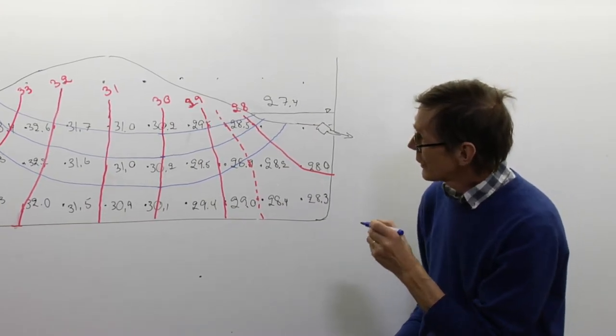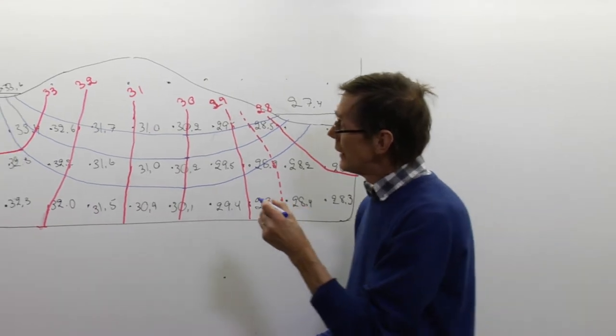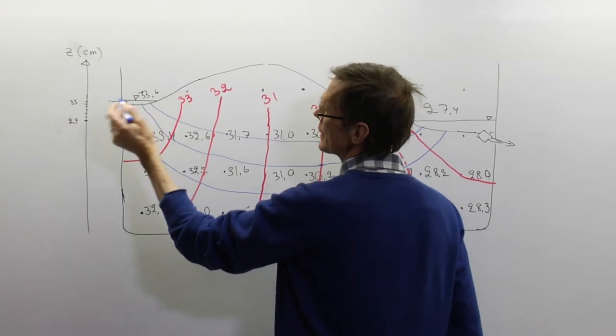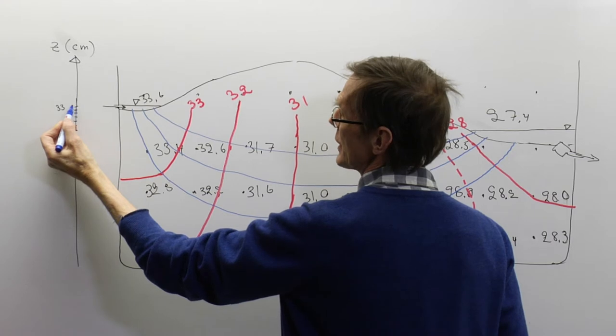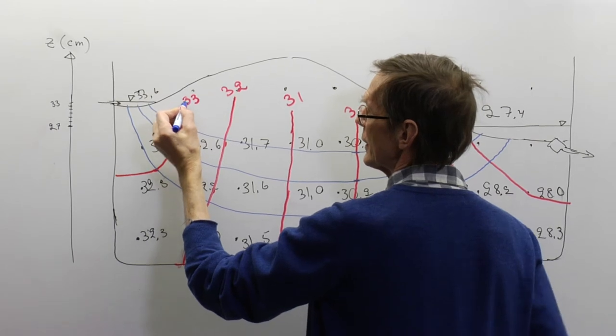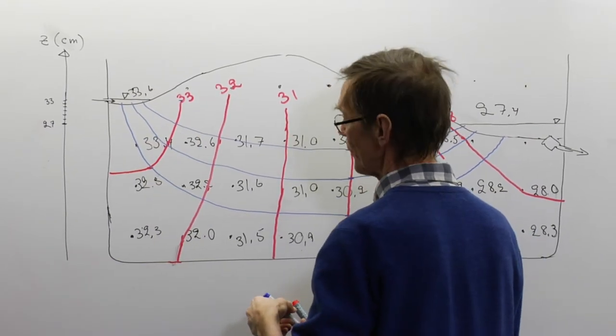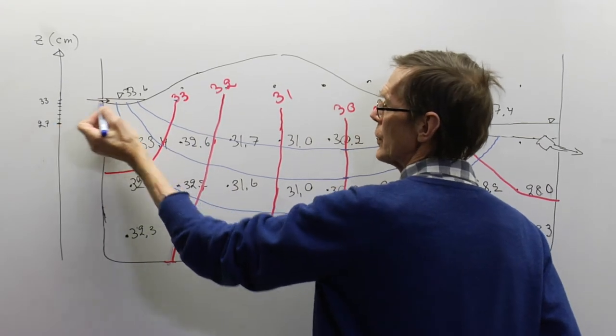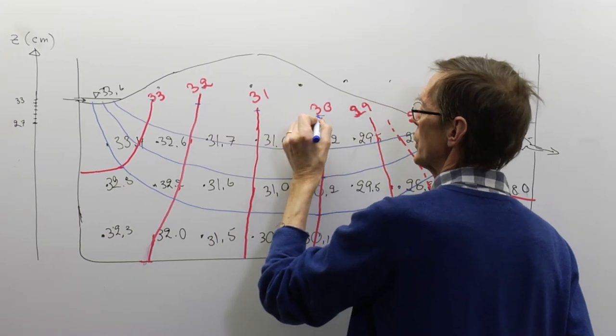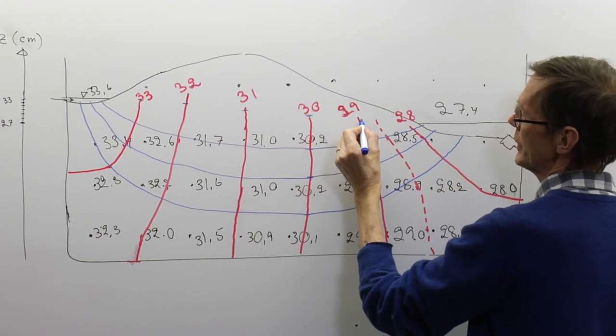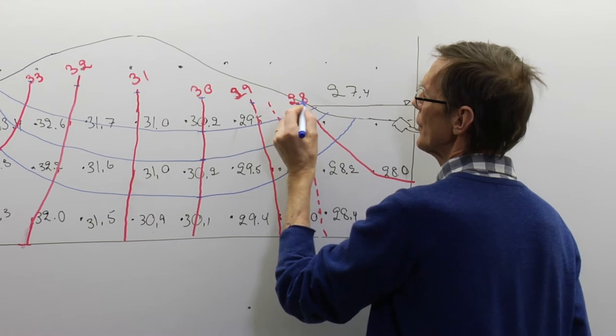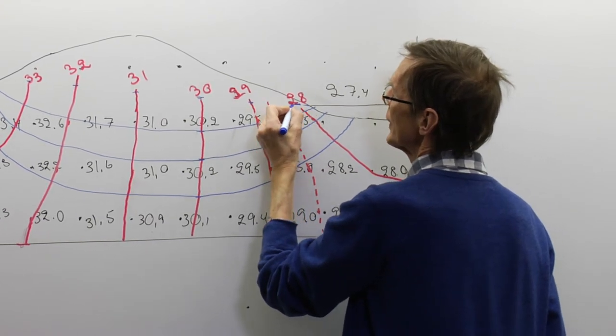We can also draw the groundwater table. It's a level where the total potential equals the height z. Pressure equals zero. Z 33 meets the 33 line here, Z 32 here, and so on. Of course you can do this carefully on graph paper or with a computer, but I do it roughly here. Here is the groundwater table.